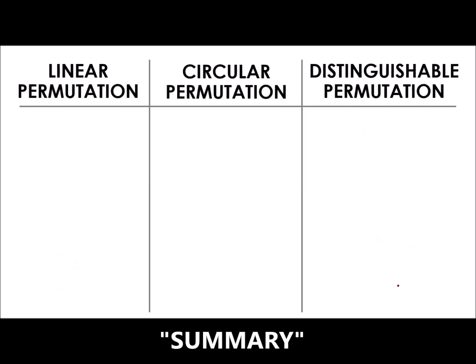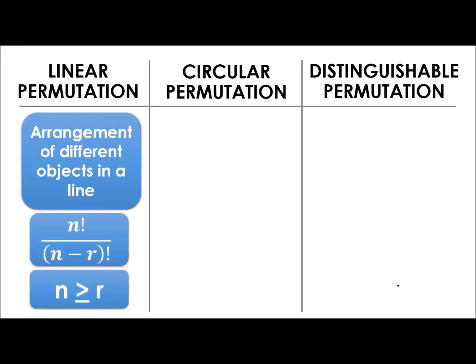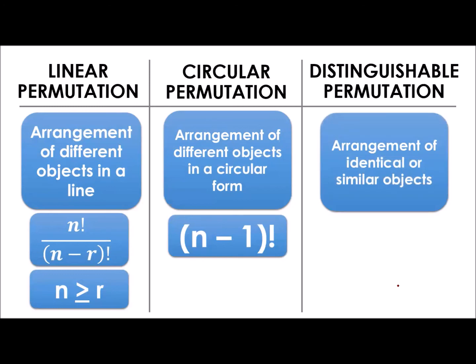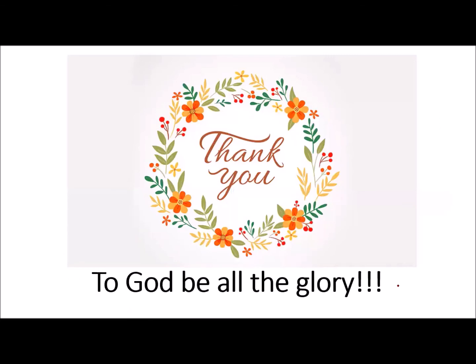Let me end with a differentiation among the three kinds of permutation. Linear: arrangement of different objects in a line — formula is n factorial all over the quantity n minus r factorial, wherein n should be greater than or equal to r. Circular: pabilog — formula is the quantity of n minus 1 factorial. And distinguishable: magkakaparehas na objects ang ating pinag-uusapan — formula is n factorial over the product of each group's factorial. I hope everything is clear. Thank you so much. To God be all the glory.